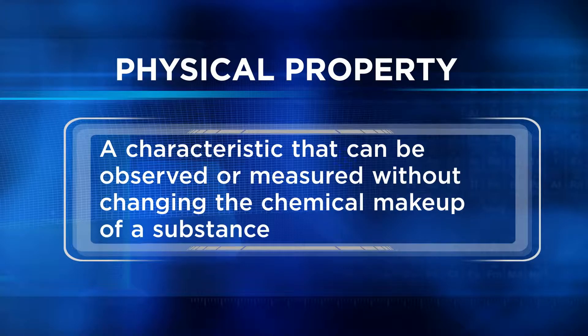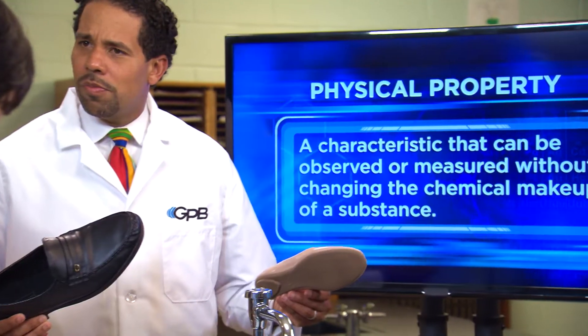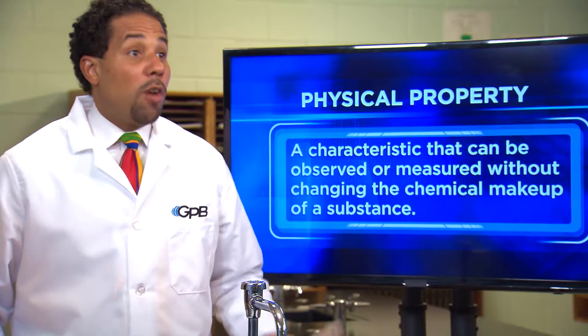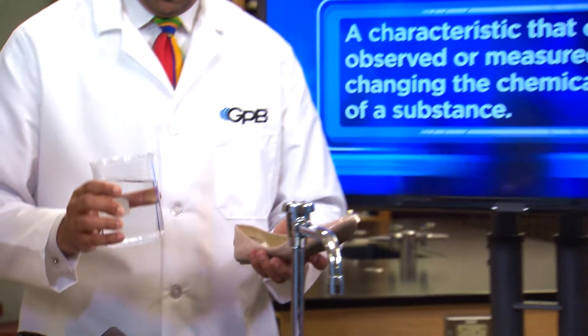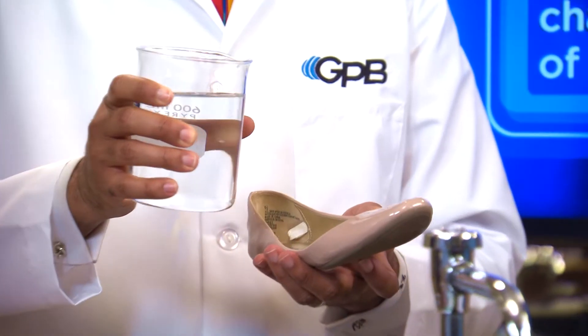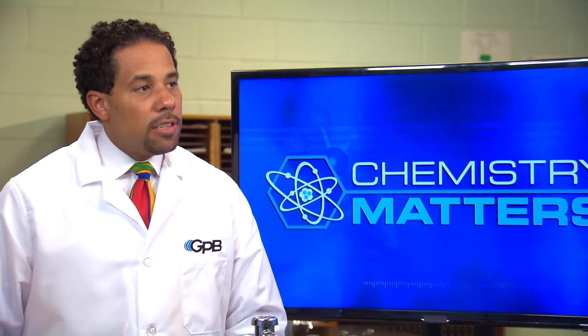Can you think of another physical property of matter? Size? What size-related measurement could we make about these shoes? Length, width, mass? Yes, and volume is a physical property too. We could measure the volume by filling these shoes with water and figure out how much they'll hold. What do you think about magnetism — is that a physical property? Sure it is, because we can measure magnetism without changing the chemical composition of the material. This is easily demonstrated by holding this magnet near this compass — see how the compass needle stays with the magnet?